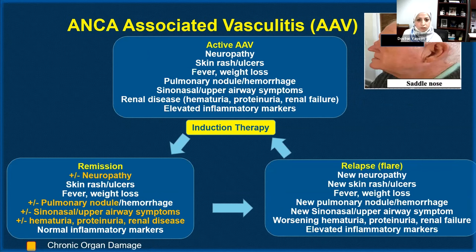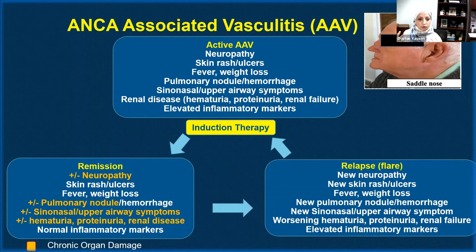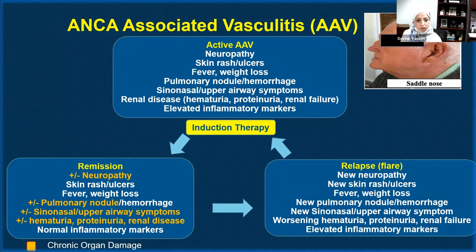ANCA-associated vasculitis includes three groups of disorders. During active disease, patients may experience neuropathy, skin rash or ulcers, fever, weight loss, pulmonary symptoms such as cough, shortness of breath, or coughing up blood (hemoptysis), sinusitis, chronic sinus congestion, otitis media, hearing loss, narrowing of the airway, and kidney problems including hematuria (blood in urine), proteinuria (protein in urine), and abnormal kidney function, along with elevated inflammatory markers.